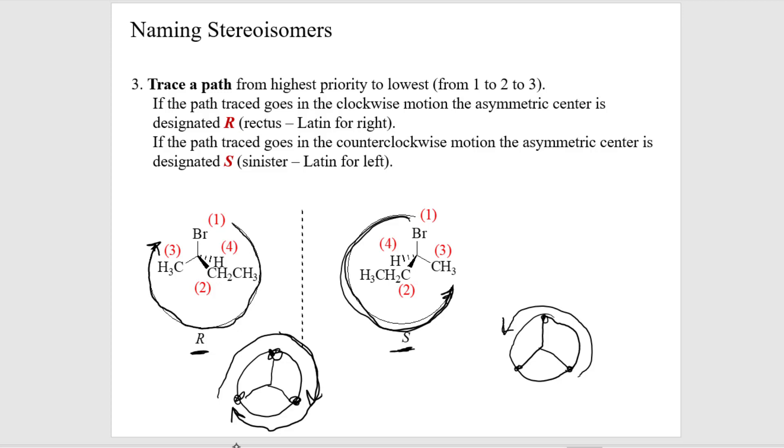If you trace the path from 1 to 2 to 3 and you're going counterclockwise — the steering wheel turning to the left — that's going to have an assignment of S for that stereocenter. Each chiral center, each stereocenter of a molecule, will get the assignment of R or S. You're not naming the entire molecule R or S — you're just naming the one stereocenter.